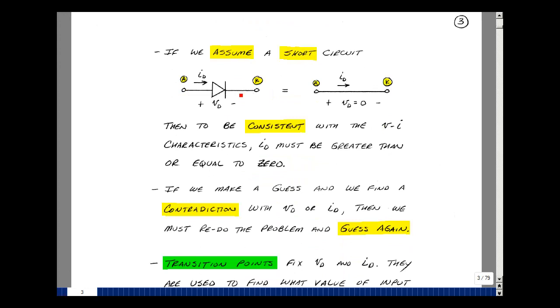We could also assume that the diode is a short circuit. So we put the model in for a short circuit, which is just a wire. Here, by definition, the voltage is equal to zero, and we label the current from anode to cathode. If this model is correct, then we need to show that this current is greater than or equal to zero. If it turns out it's less than zero, then that's a contradiction. And so we're going to take a guess, solve for the voltage or current of interest, and see whether it's consistent with the guess.